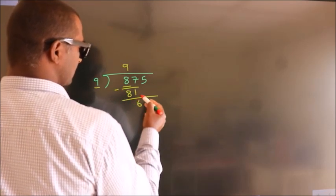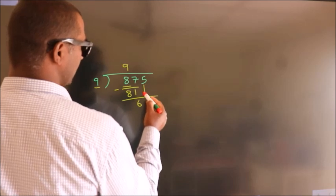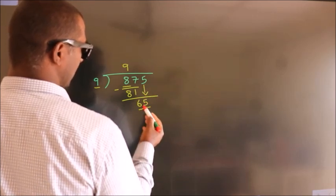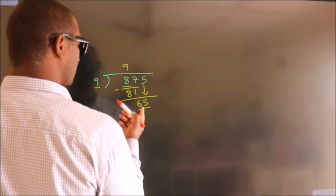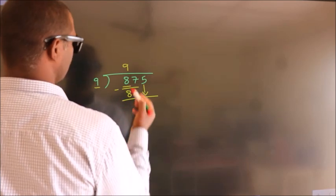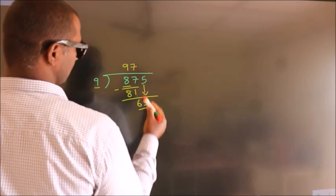After this, bring down the beside number. So 5 down, so 65. A number close to 65 in 9 table is 9 7s, 63.